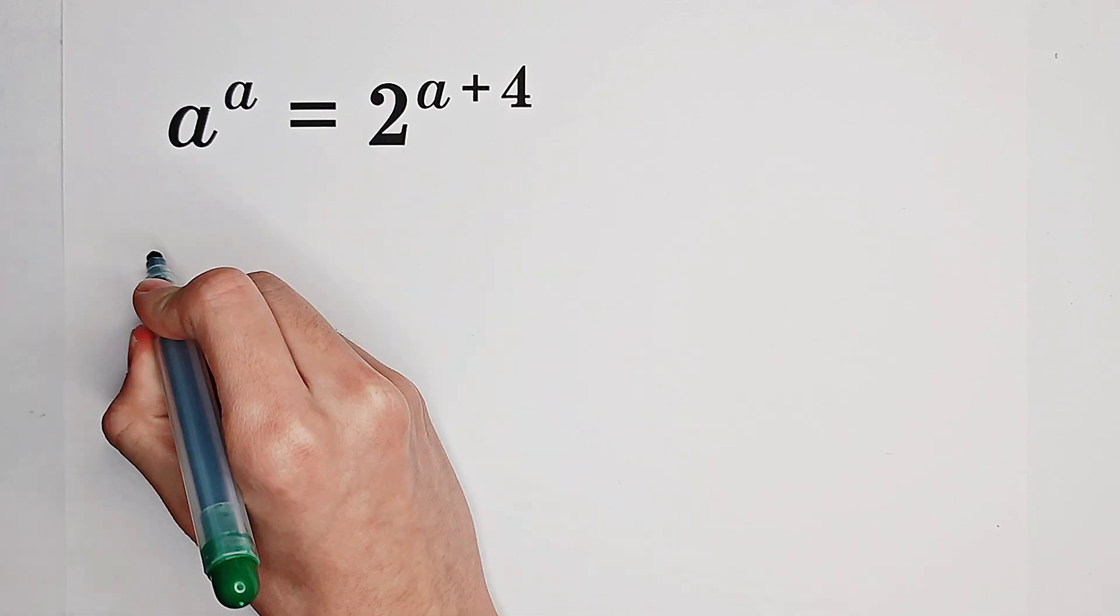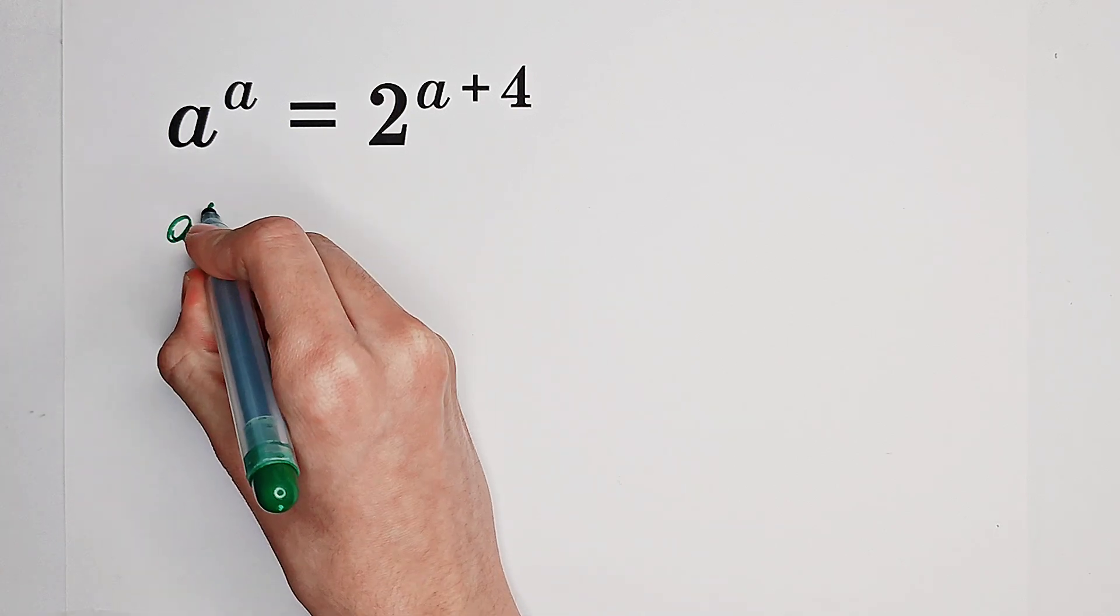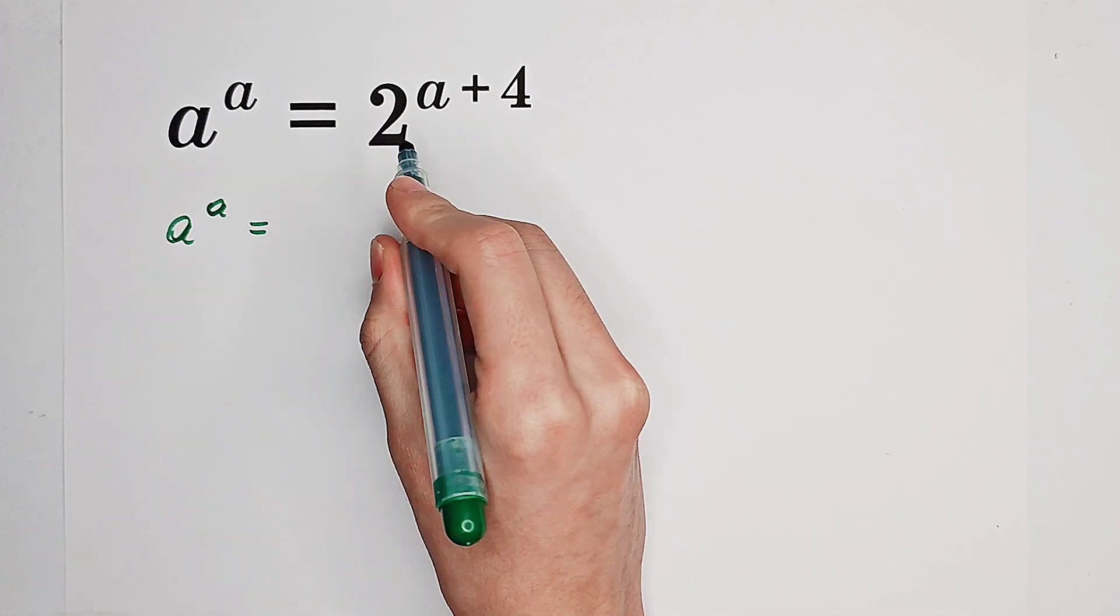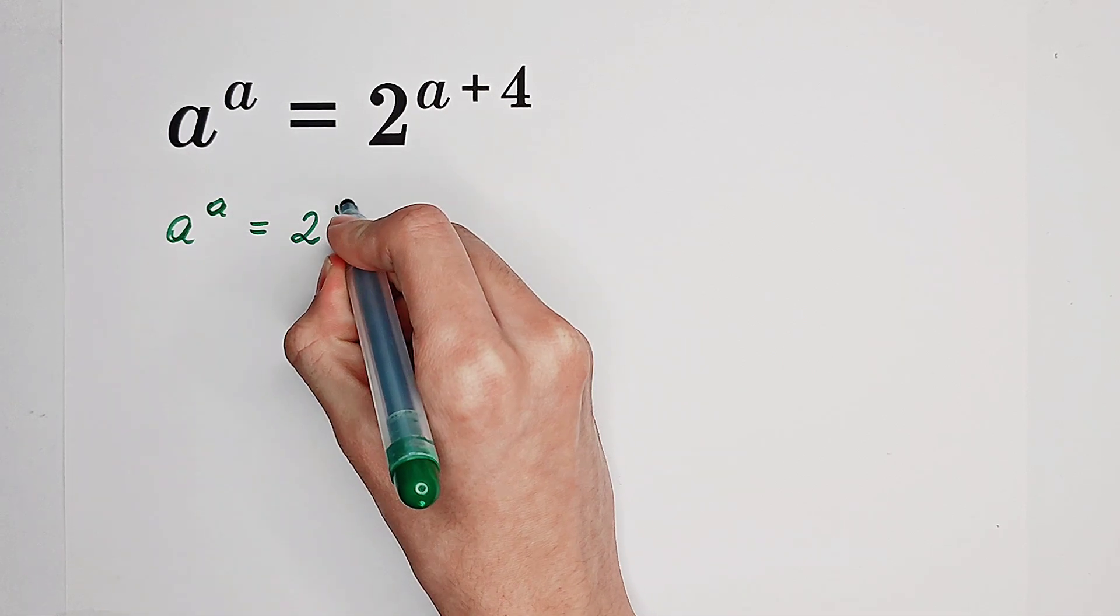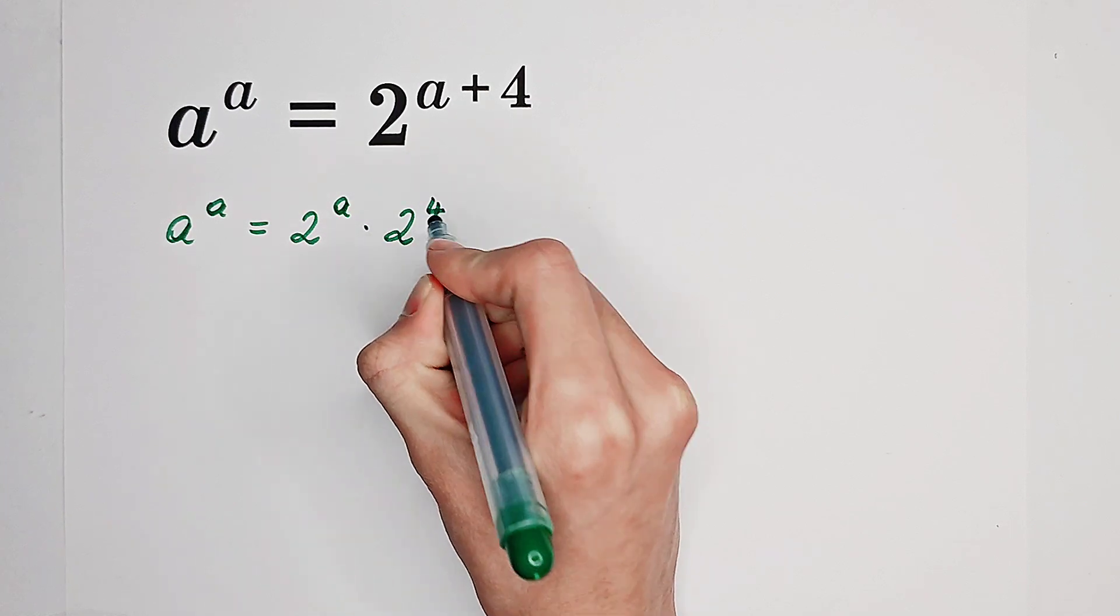Now, firstly, look. 2 to the power of A plus 4. That is, 2 to the power of A times 2 to the power of 4.